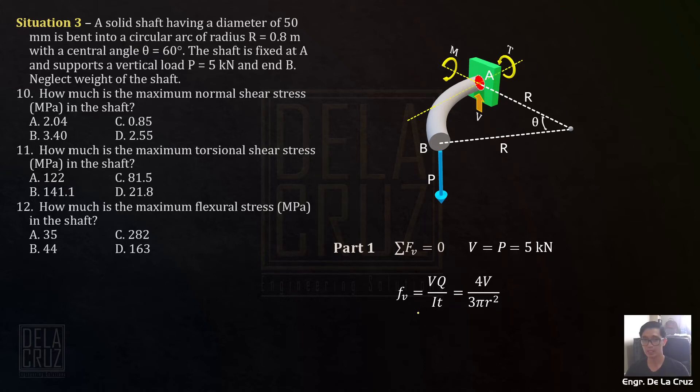Substituting the values, V is 5,000 newtons, 3πR². The R here, take note, is the radius of the cross section, not the radius given as 0.8. The radius of the cross section is half of its diameter. Diameter is 50, means radius is 50 over 2 squared. The answer is 3.4 megapascals.